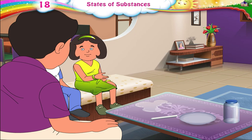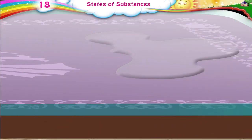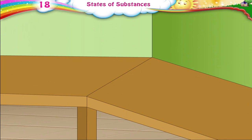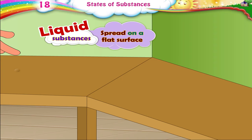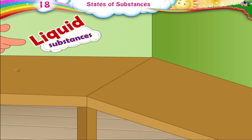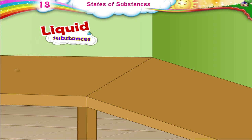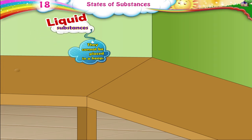Oops. Papa, I was seeing how water changes its shape and, by mistake, dropped some of it on the table. Look how it spreads. That's okay, Rhea. All liquid substances spread on a flat surface. They flow down a slope. Liquids do not have a definite shape, and they cannot be placed in a heap.